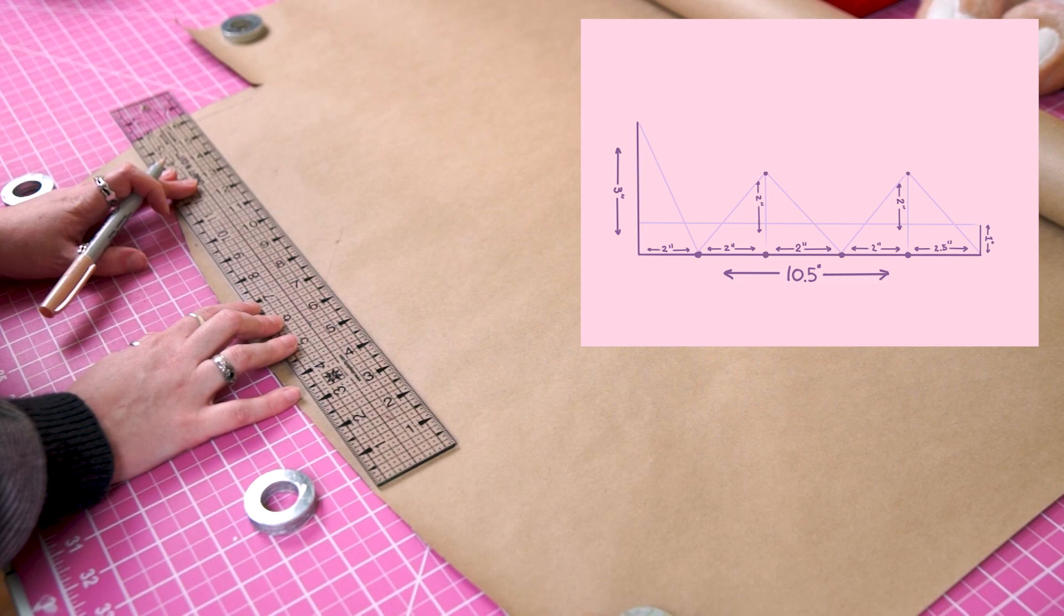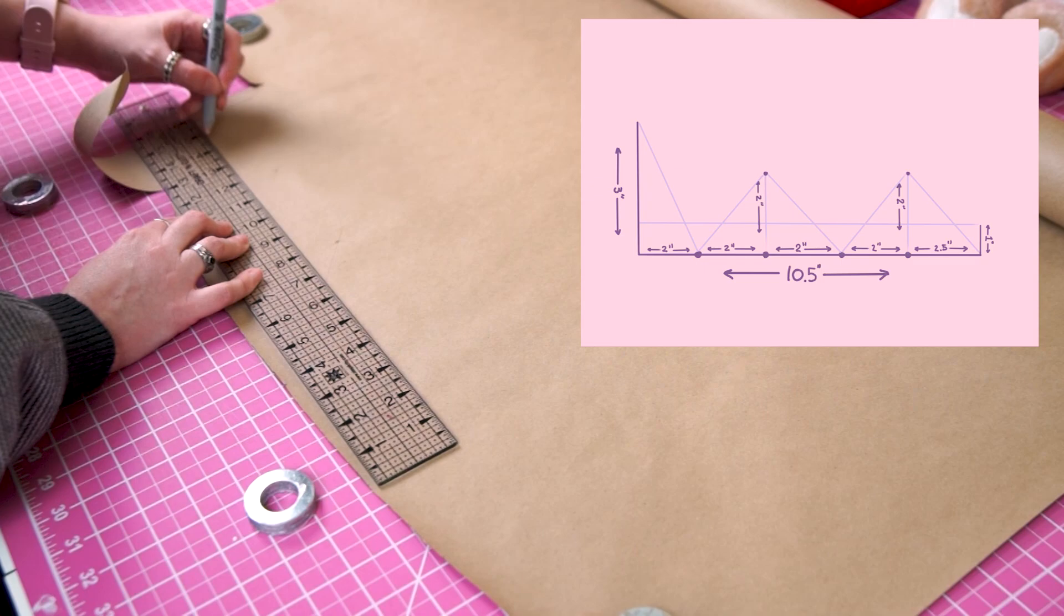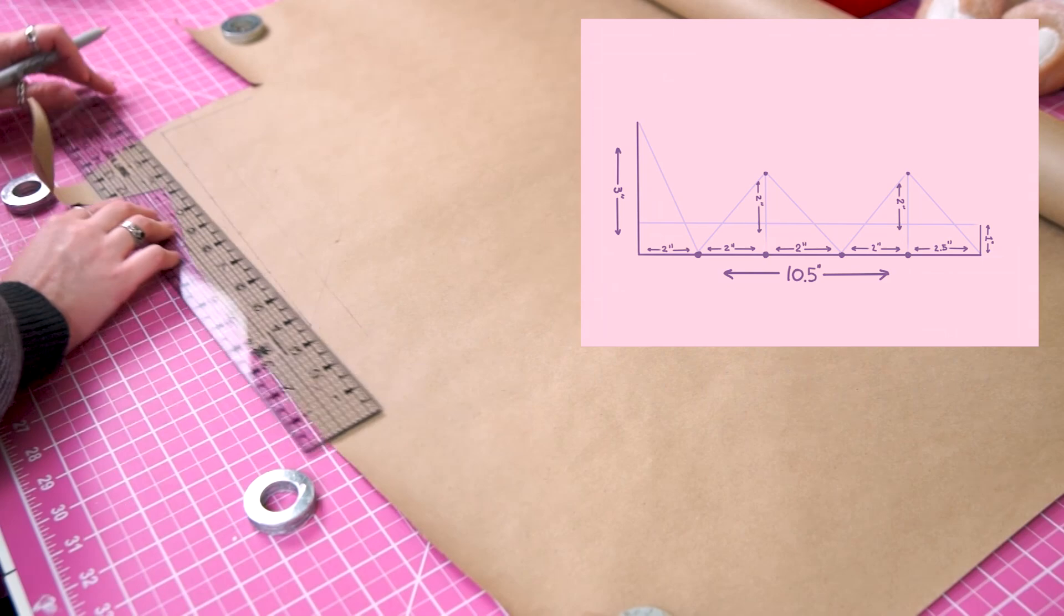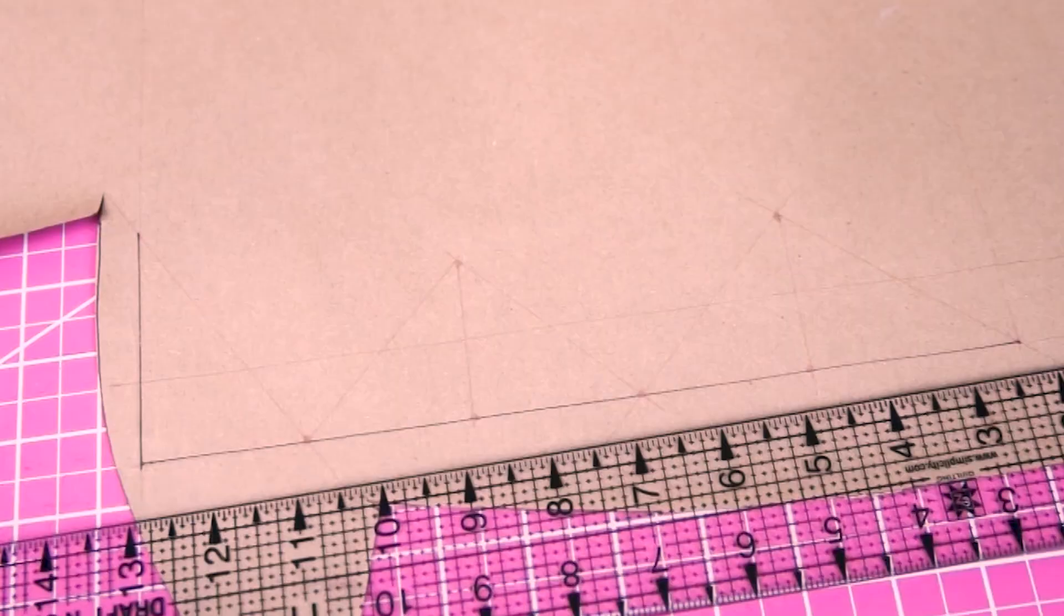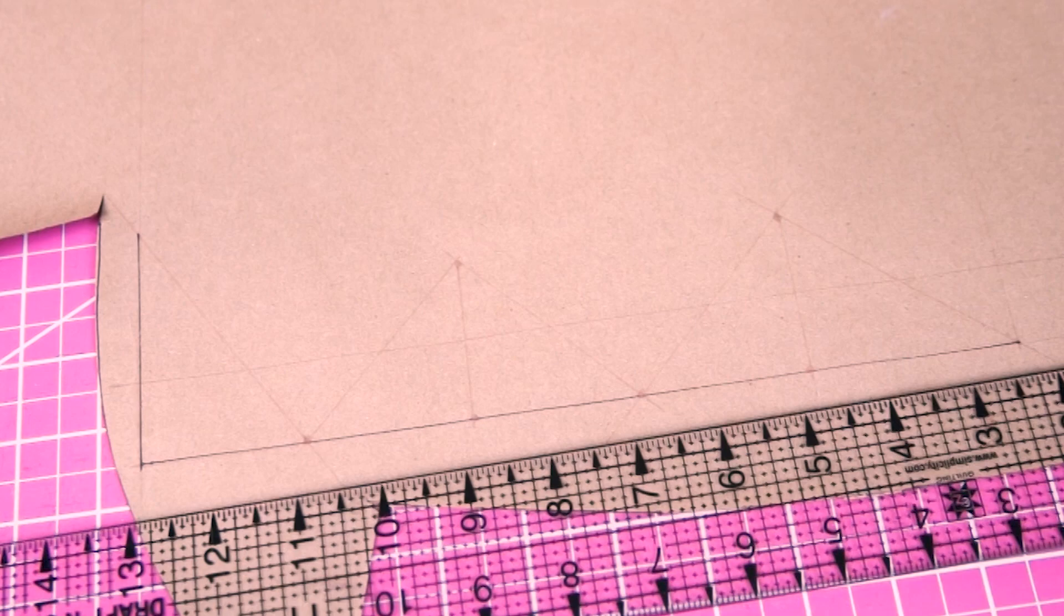I've drawn a line an inch above my bottom line to use as a reference point. I will hopefully have some diagrams on the screen to help me explain all this math because I know it's a lot of information at once. So far the rough draft of our pattern should look like this.